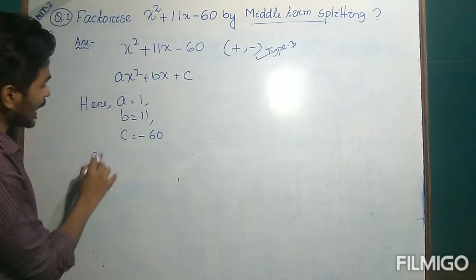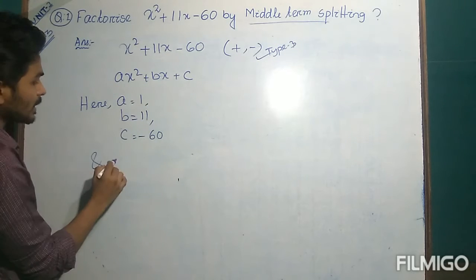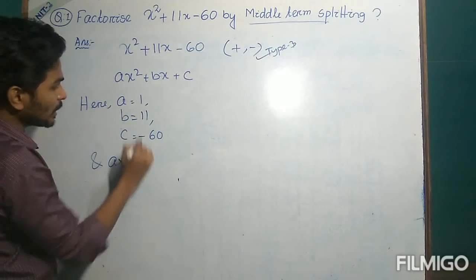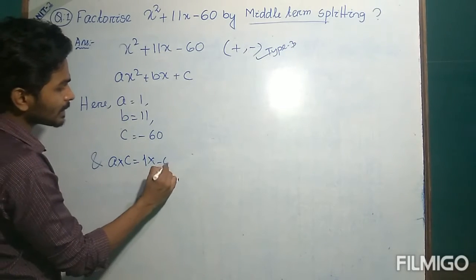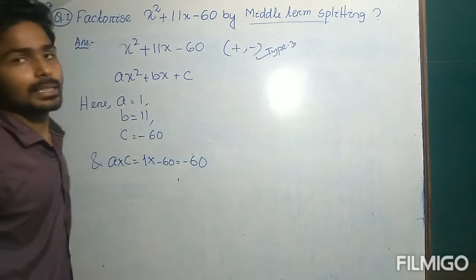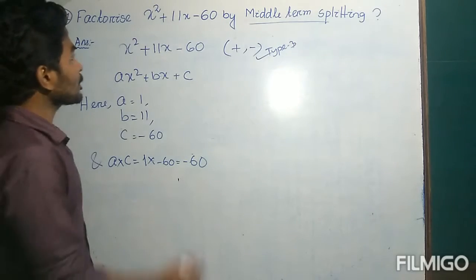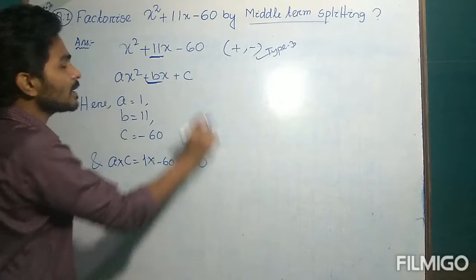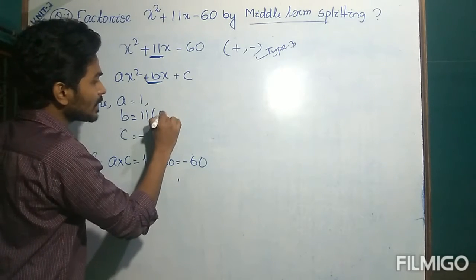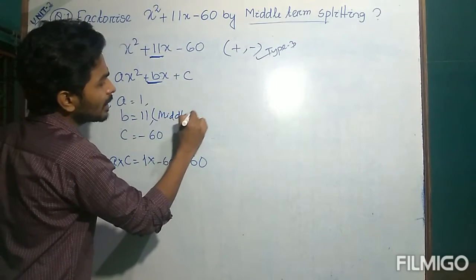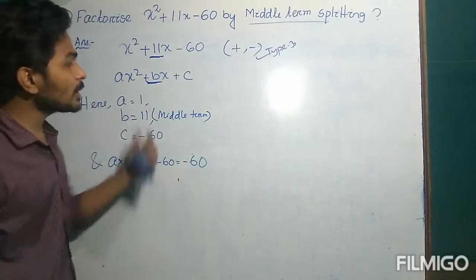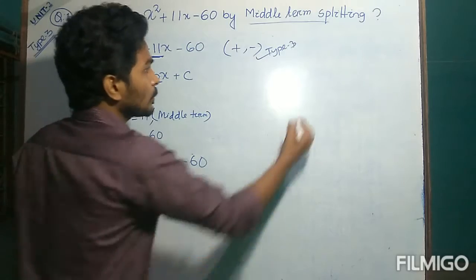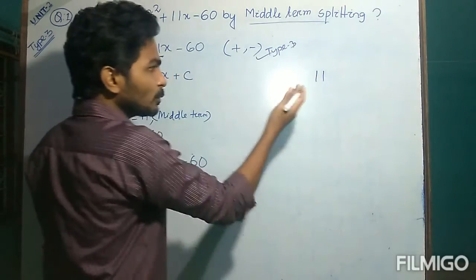The multiplication of coefficient of x squared, that is A, with the constant term C is equal to 1 into minus 60, that is minus 60. Here plus 11 is the middle term, or you can say plus B is the middle term. So we have to split this middle term into two parts — we have to split 11 into two parts.